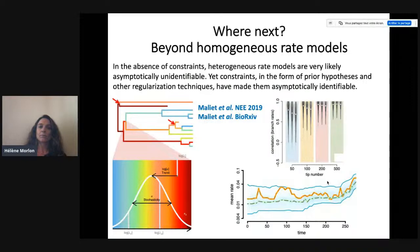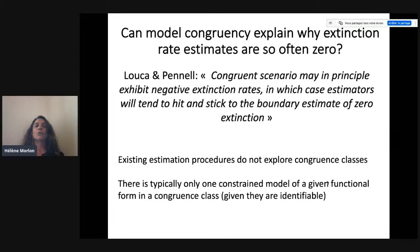Looking at estimates of rates through time — simulated rates in yellow, estimated rates in green — we won't capture all the variations through time, but there's still a reasonable estimation even with extinction compared to the simulated rates. Regarding whether model congruency can explain why extinction rate estimates are so often zero: congruent scenarios can in principle exhibit negative extinction rates, and if we had estimators that explore congruence classes, they could hit the boundary of zero extinction. But we don't have such inference machinery. Current estimation procedures do not explore congruence classes — there is typically only one of our constrained models of a given functional form in a congruence class, and so our optimization procedure has little to do with exploring congruence classes.